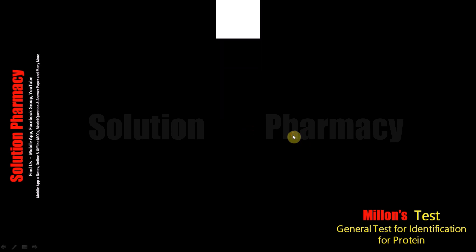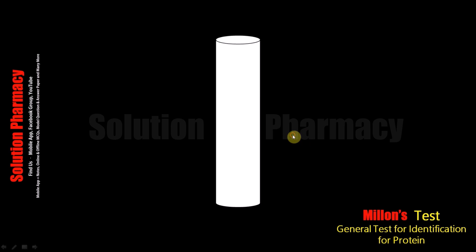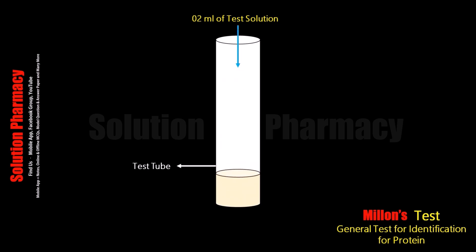First of all, we will take a test tube and then add 2 ml of test solution, in which we have to detect the presence of protein containing tyrosine amino acid. After adding 2 ml of the test solution into the test tube, we have to add a few drops of Millon's reagent.